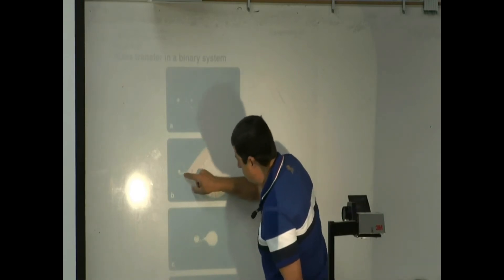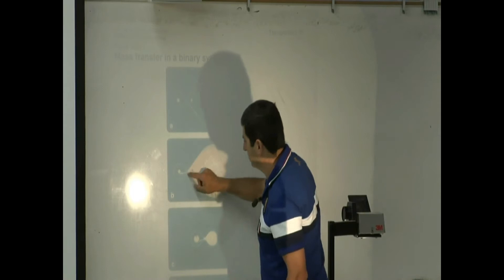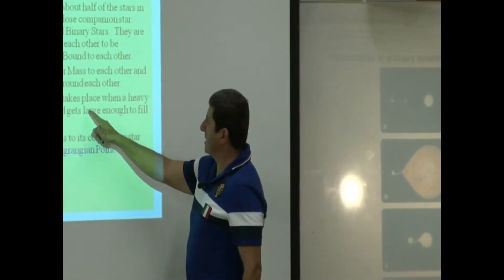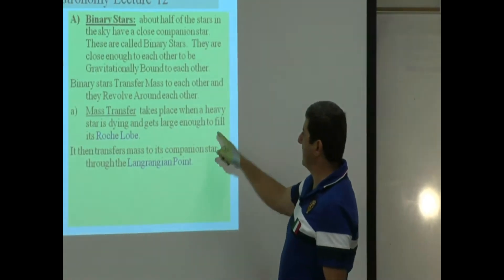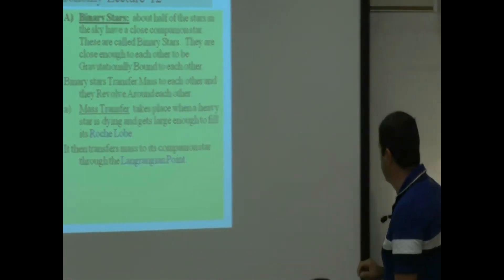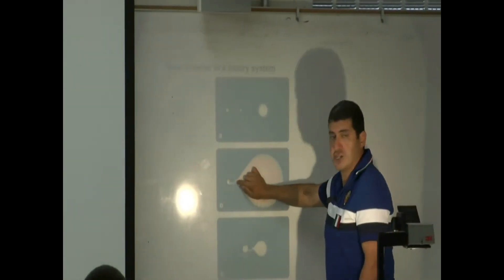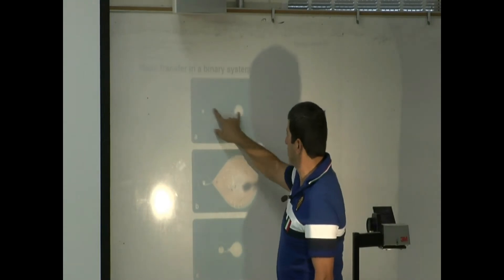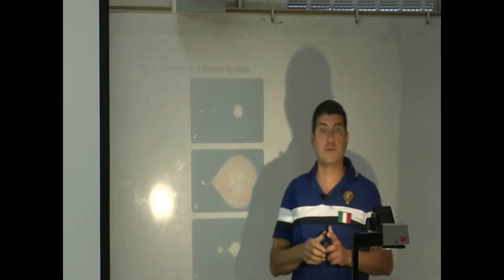It becomes a red supergiant and then because there is a companion, it starts feeding it. Mass transfer takes place when a heavy star is dying, gets large enough to fill its Roche lobe. It then transfers mass to its companion through the Lagrangian point. The Lagrangian point is the point between the two stars where the two Roche lobes meet.